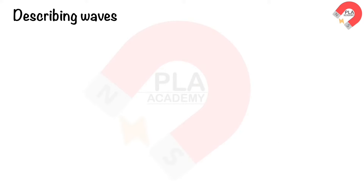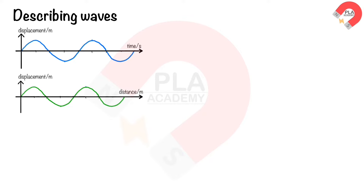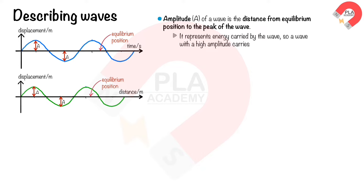Describing waves. Here is the displacement-time graph of a traveling wave, and the displacement-distance graph of a traveling wave. Amplitude, A, of a wave is the distance from the equilibrium position to the peak of the wave. It represents the energy carried by the wave, so a wave with a high amplitude carries a lot of energy.